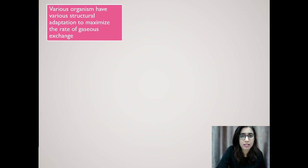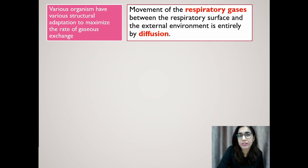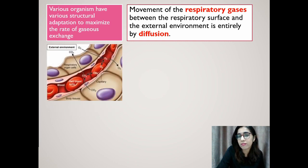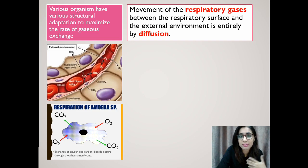Various organisms have various structural adaptations to maximize the rate of gas exchange. Now what is gas exchange? Gas exchange is the process of oxygen uptake from the environment and the carbon dioxide released to the environment by the living organism. Respiratory gas exchange takes place on the respiratory surface in the respiratory structure of a living organism through diffusion. As you have learned in chapter 2, unicellular organisms such as amoeba do not need specialized respiratory structures because they have a large total surface area to volume ratio for gas exchange through diffusion.